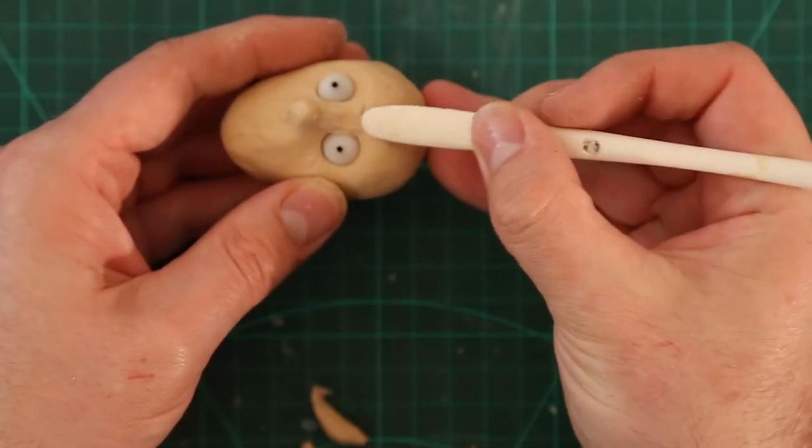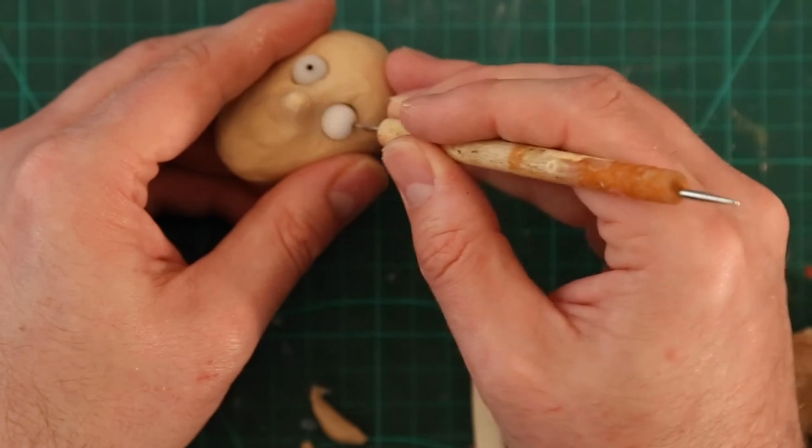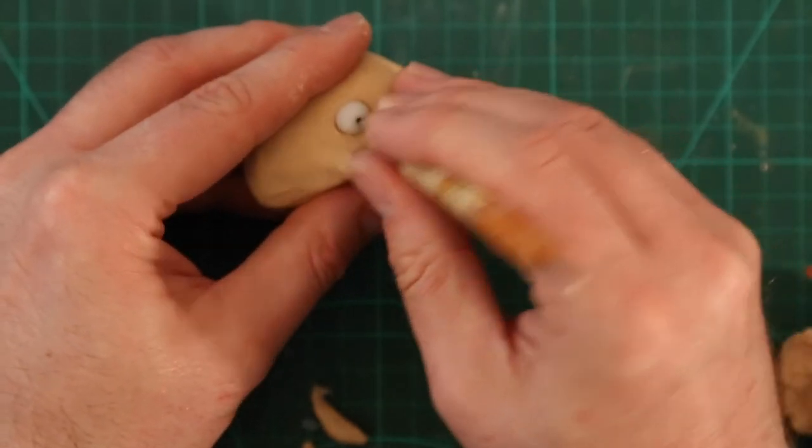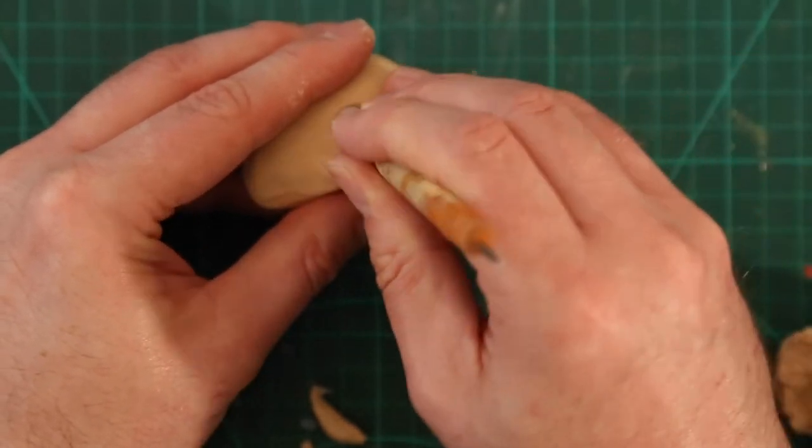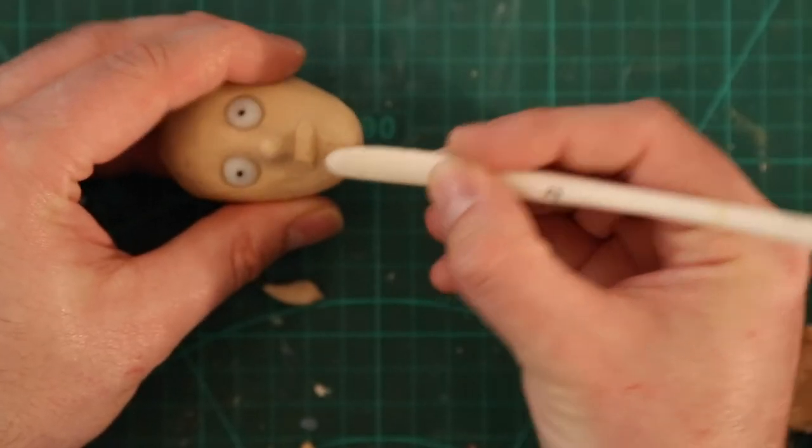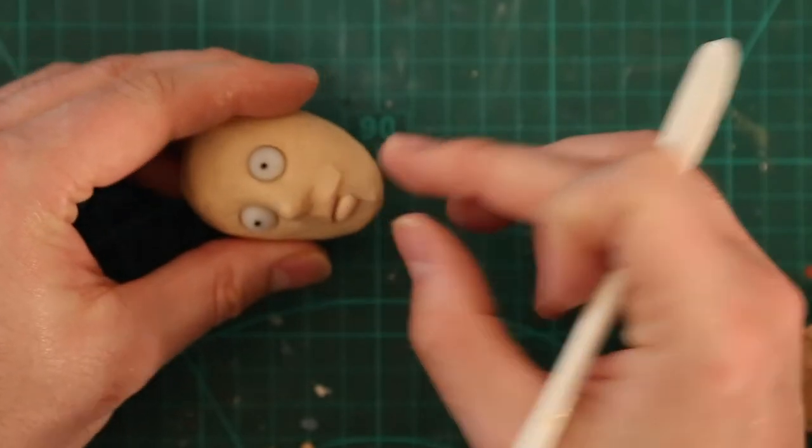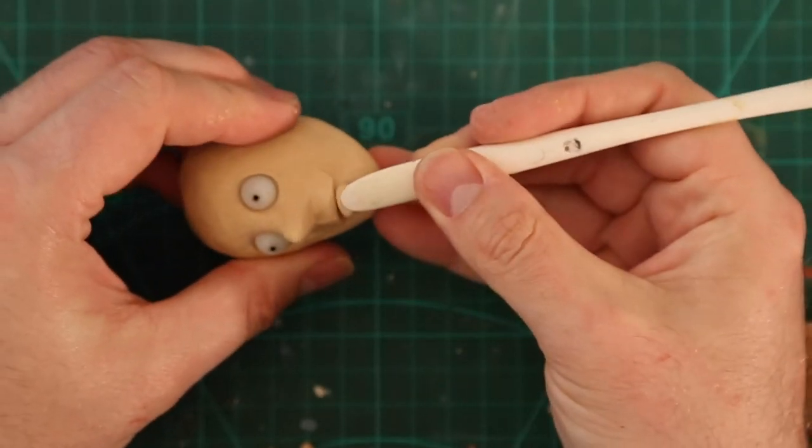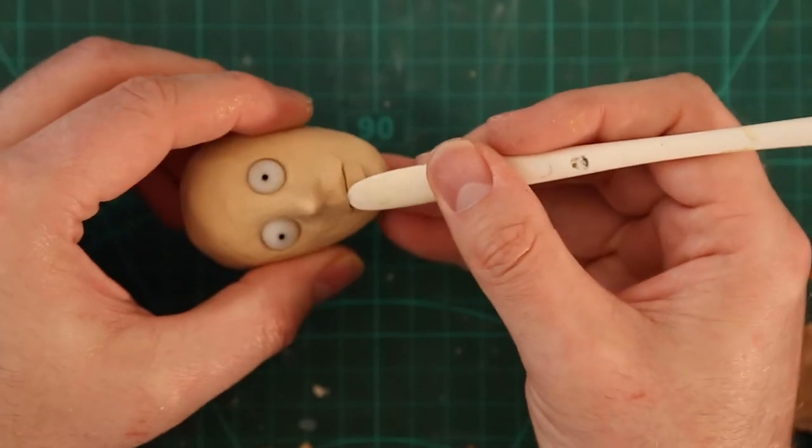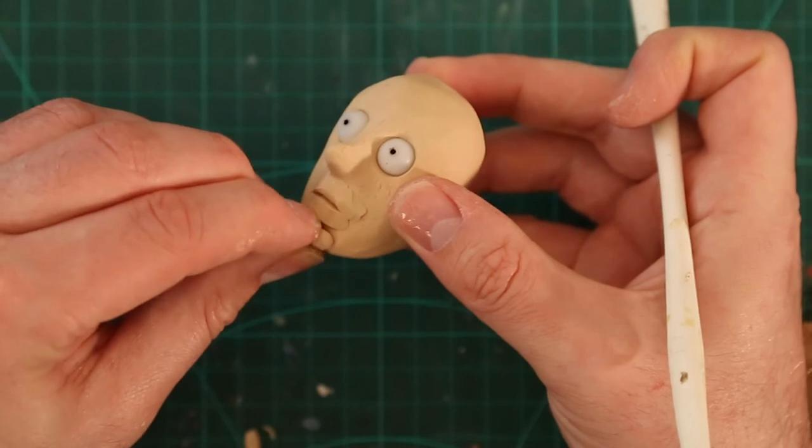Building up the bridge of the nose. And again, I pull out the eyes and just roll around the eye sockets a little bit just to kind of smooth them out. And then I build up the upper lip and then the lower lip, and then add some extra details like the chin and the eyebrows.